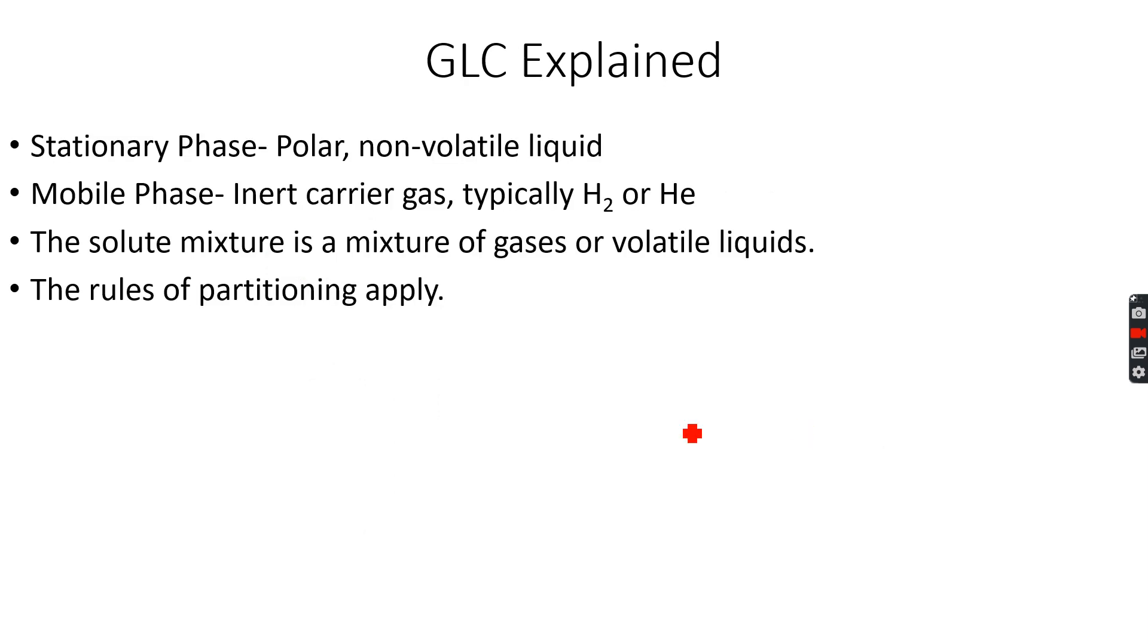Let's go to the chemistry behind GLC. The stationary phase is a polar, non-volatile liquid, and the mobile phase is an inert carrier gas, typically H2 or helium, because both of them are very inert.